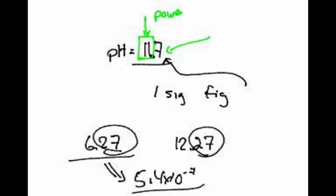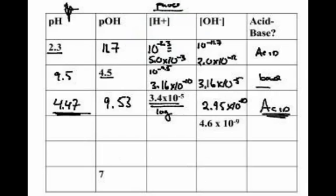Since that number had two significant figures, my answer should have two significant figures, and that would be 5.4 times 10 to the negative 7. You can put that in your calculator. Our sig figs are wrong in here — this number here is wrong. Because we only have one sig fig in this answer.